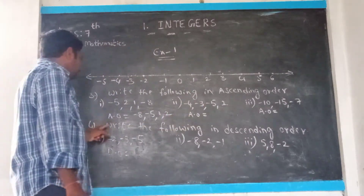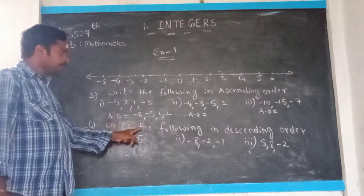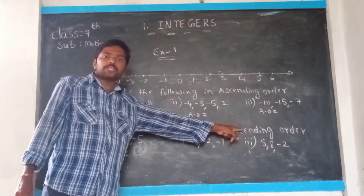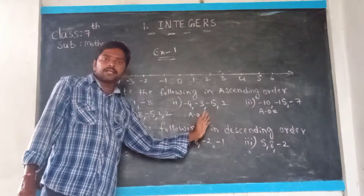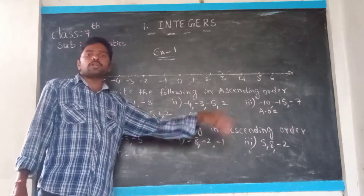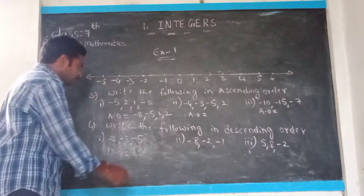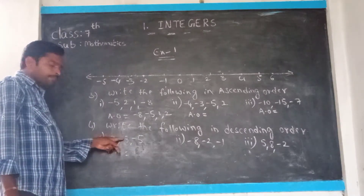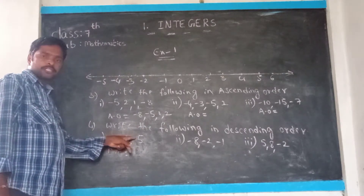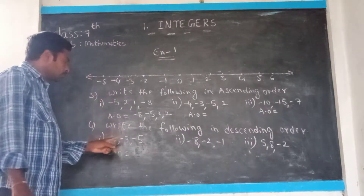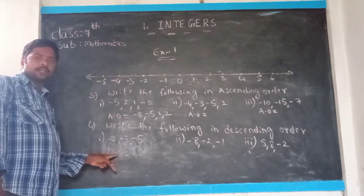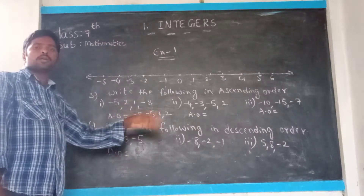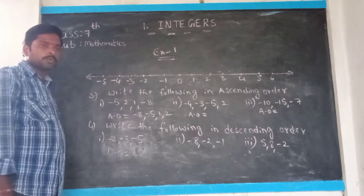Now you go to the fourth Roman: write the following in descending order. Descending order means big number to small number. So what is the first sum given? Minus 2, minus 3, and minus 4 — you are given three numbers. Write in descending order — big number to small number.